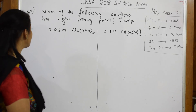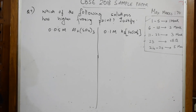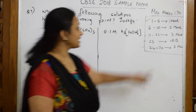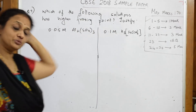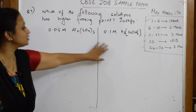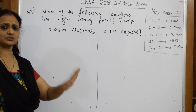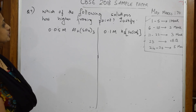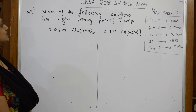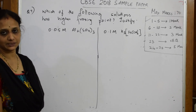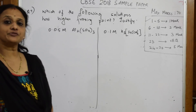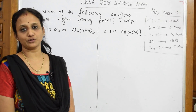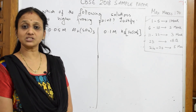Let's see question seven — this is a two-mark question. You have a numerical where you are given two bits, so do it carefully. Which of the following solutions has a higher freezing point? Justify the answer. Being in the solutions chapter, we have already studied the freezing point concept.